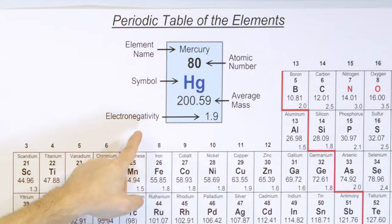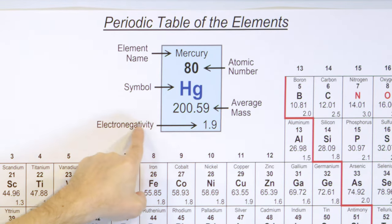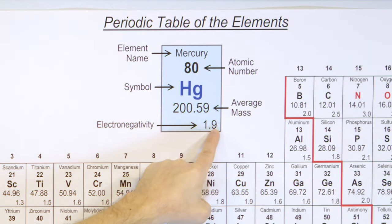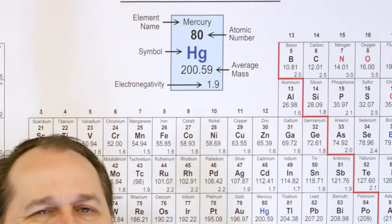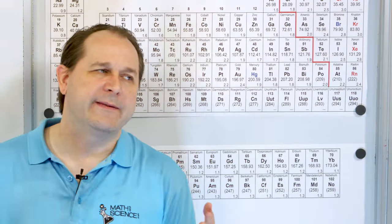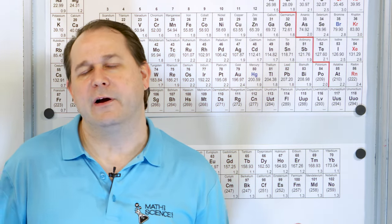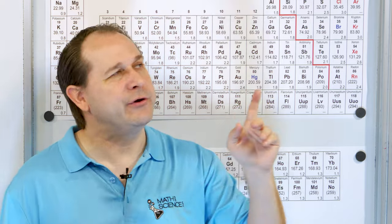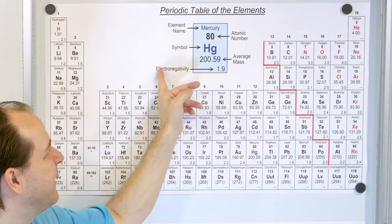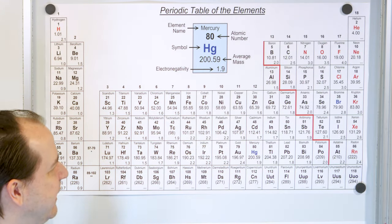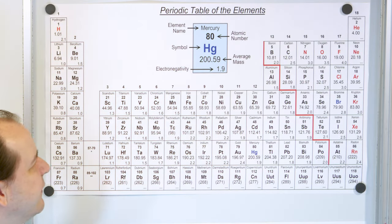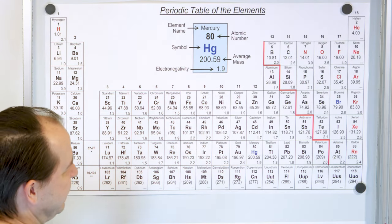In the corner of this table we have something called electronegativity, which has to do with how strongly an atom attracts or doesn't attract electrons. We're going to talk about that a lot more later, so you can pretty much ignore the electronegativity until we get to those lessons.